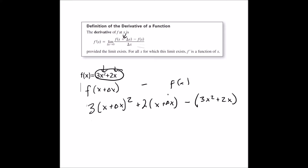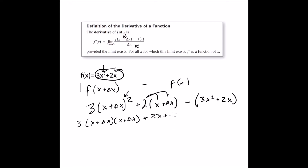Here is our function of x, so we subtract 3x squared plus 2x. And at the end, we divide it all by the change of x. Now we take 3 and multiply it by (x plus the change of x) times (x plus the change of x) — that's x plus the change of x squared, written twice and then FOILed. Distributing the 2 gives positive 2x and 2 times the change of x. Then distributing the negative sign gives minus 3x squared minus 2x.